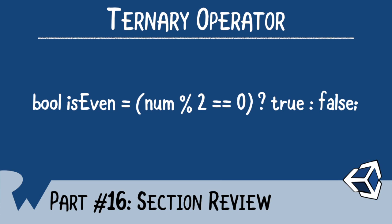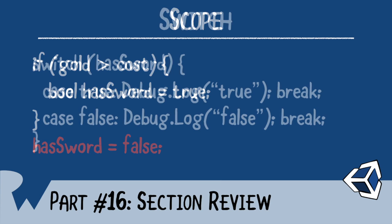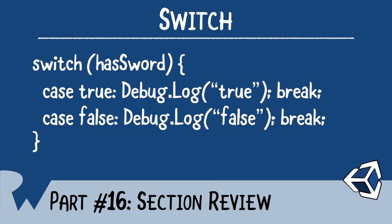Of course, when you have if-statements, the concept of scope must be covered. Scope determines how variables are accessed, and later, you'll learn how it will affect memory management as well. After scope, you learned about the switch statement. The switch statement can be thought of as another type of if-statement — it's a way of branching code based on a value.